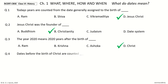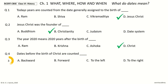Question 4. Dates before the birth of Christ are counted — your options: backward, forward, to the left, to the right. And the answer is backward.